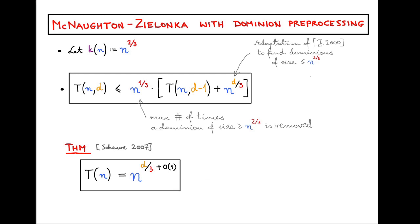That was the algorithm with the best running time from 2007 until 2017, when a big breakthrough came in the form of a quasi-polynomial time algorithm discovered by Calude, Jain, Khoussainov, Li, and Stephan. Next week we are going to talk about the quasi-polynomial era and algorithms for solving parity games. Thank you.